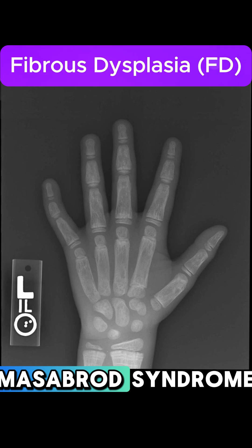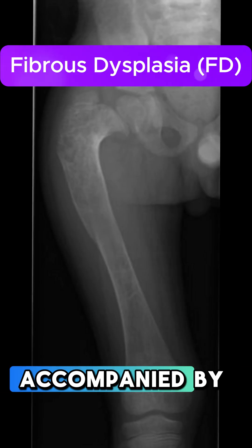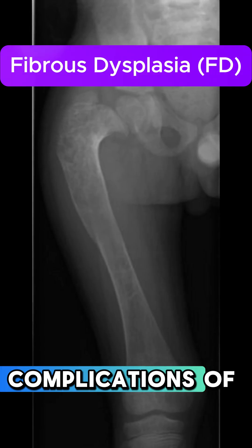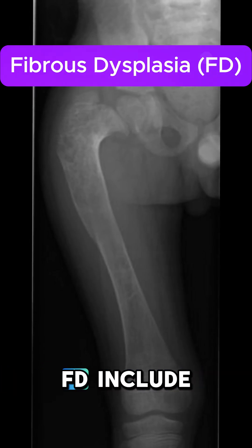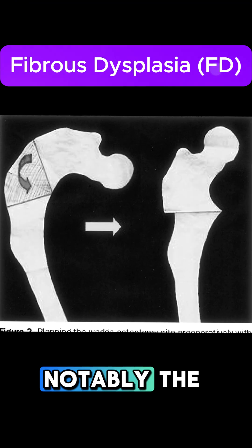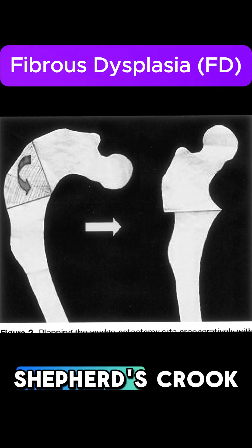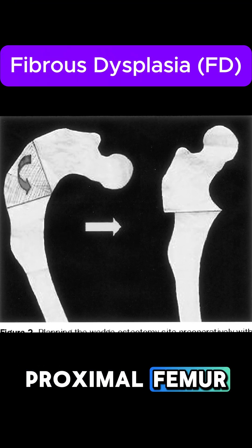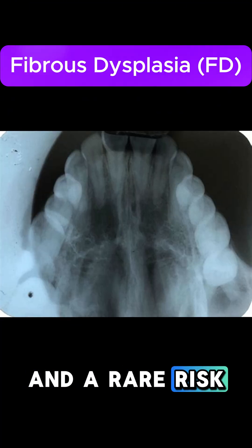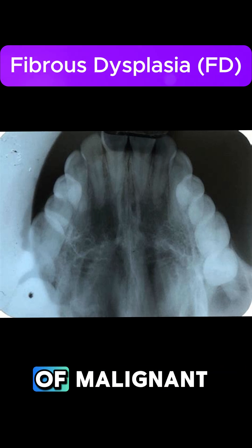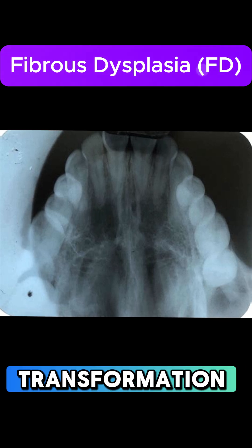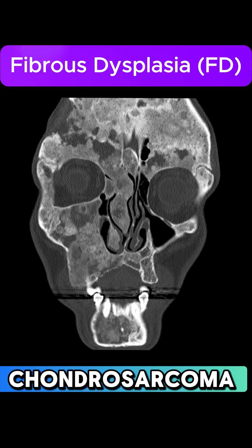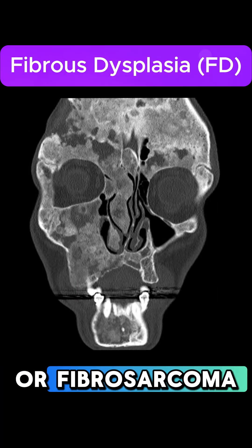Mazabraud syndrome involves FD accompanied by intramuscular myxomas. Complications of FD include pathologic fractures, notably the Shepherd's Crook deformity of the proximal femur, and a rare risk — approximately 1% — of malignant transformation into osteosarcoma, chondrosarcoma, or fibrosarcoma.